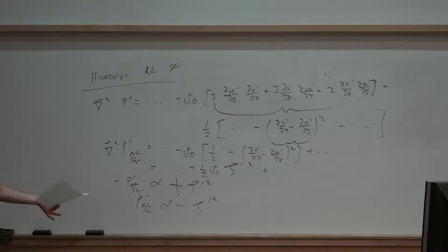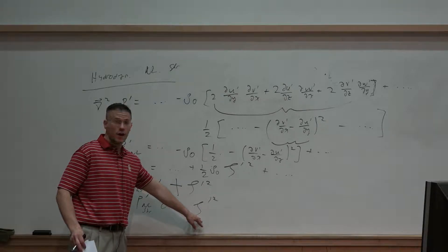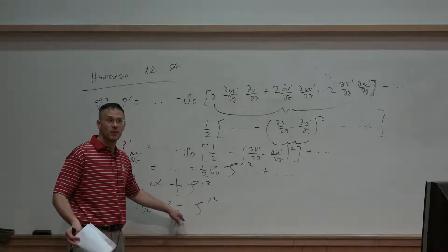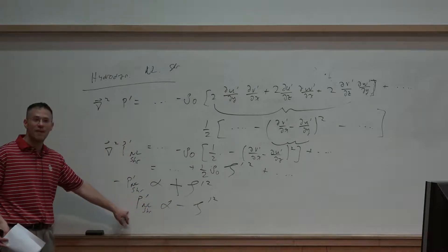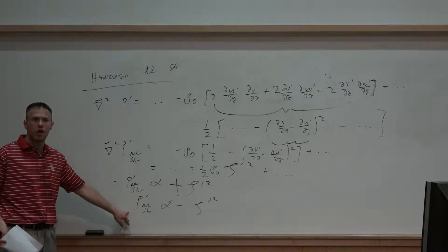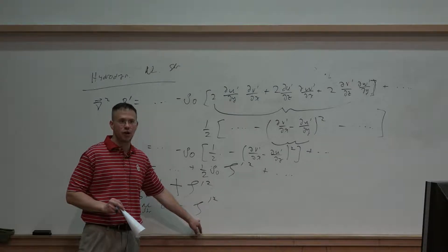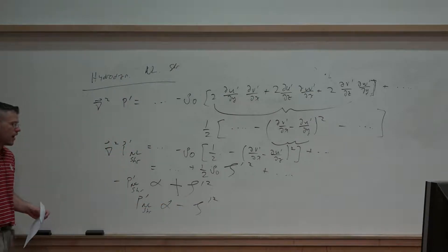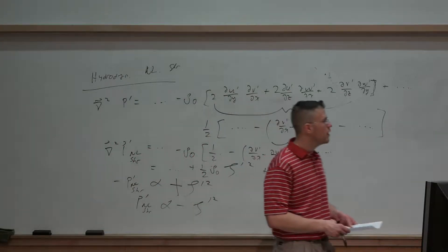What does this mean? This says that wherever we have vertical vorticity — whether positive or negative — because we're squaring it, we always get a positive value. With the minus sign out front, whether we're dealing with cyclonic or anticyclonic vertical vorticity, that is going to be associated with a pressure deficit from the nonlinear shear terms. We'll always have a negative perturbation pressure when we have any non-zero vertical vorticity, regardless of sign.